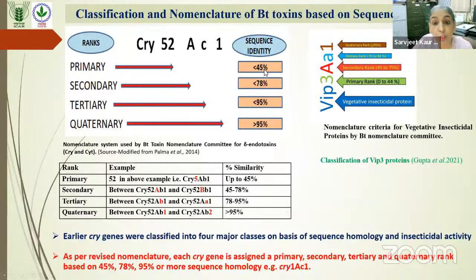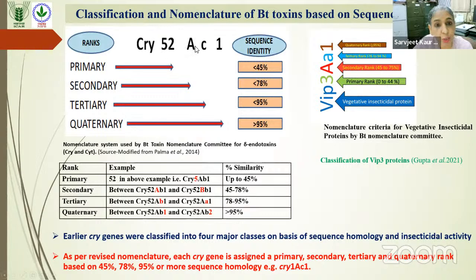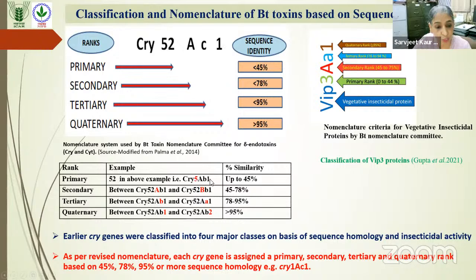In this nomenclature system, there is a primary rank where genes share up to 45% homology, a secondary rank up to 78% homology, a tertiary rank up to 95% homology, and more than 95% homology is assigned the quaternary rank. For example, Cry1Ac1: '1' is the primary rank, meaning all genes with up to 45% homology are in Cry1. 'A' is the secondary rank up to 78% homology, 'C' the tertiary up to 95%, and '1' the quaternary allele designation. Similarly, vegetative insecticidal proteins (VIPs), produced during the vegetative phase of growth, are classified into four ranks as well.